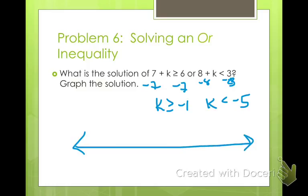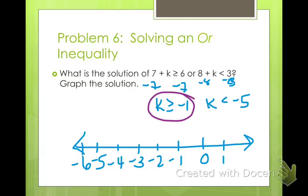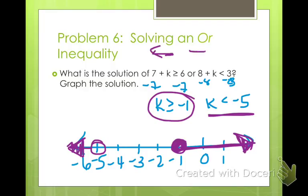So we're going to put this on a number line. So I'm going to graph each one individually. So K is greater than or equal to negative 1. So I'm going to start at negative 1, make a closed circle, greater than goes this way. And then K is less than negative 5. Negative 5 is an open circle pointing to the left. Just like that. Remember, OR always points away.